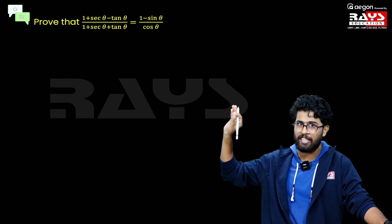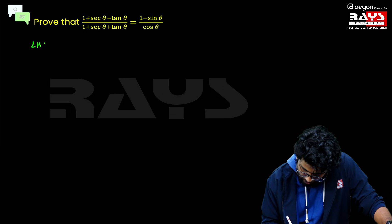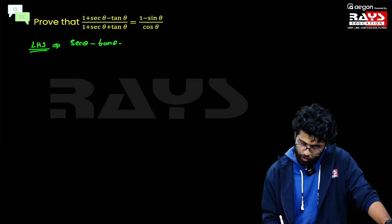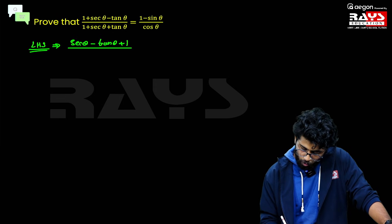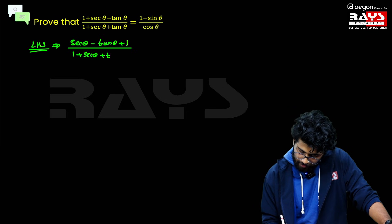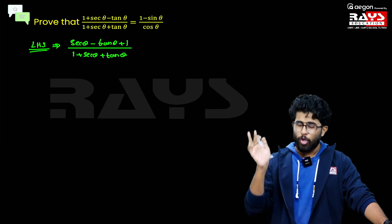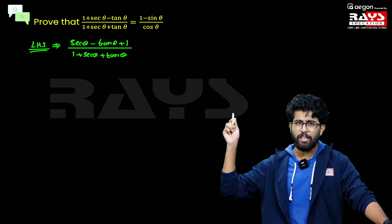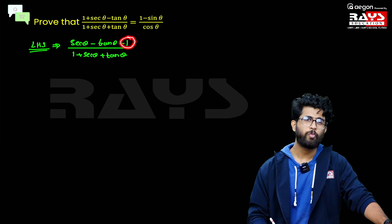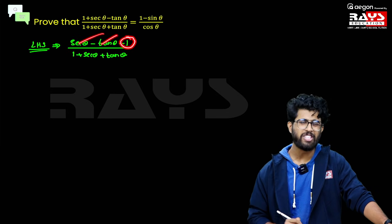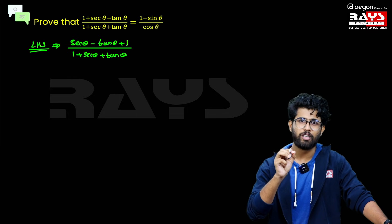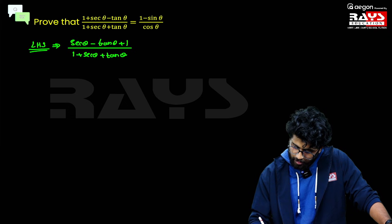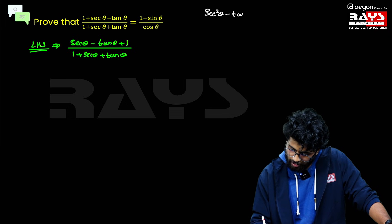Taking the LHS, I'm going to rearrange the terms in the numerator and write it as (sec θ − tan θ + 1) divided by (1 + sec θ + tan θ). I'm not going to touch the denominator. Now we know what '1' is — we can write 1 in terms of secant and tangent. We can write 1 as sec²θ − tan²θ, which is an identity of trigonometry.